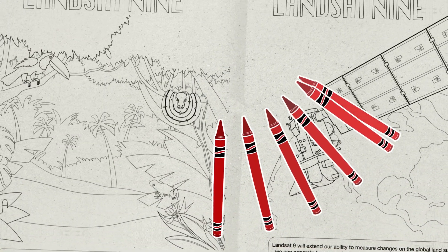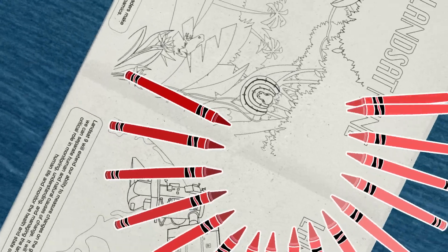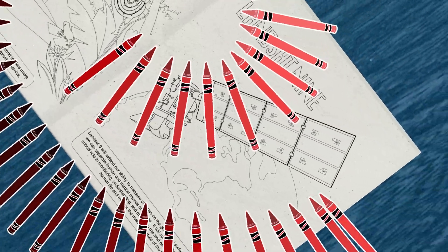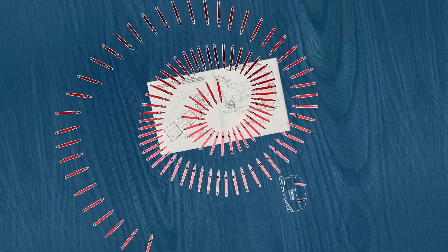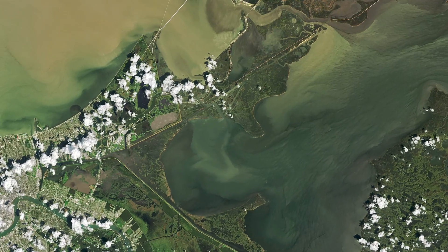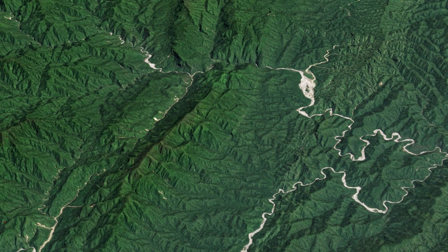Landsat 9, the newest satellite to join the Landsat fleet, sees 16,384 shades. That's four times the depth of color of the previous Landsat, meaning we'll be able to see more detail in darker spots like coastal waters and dense forests.